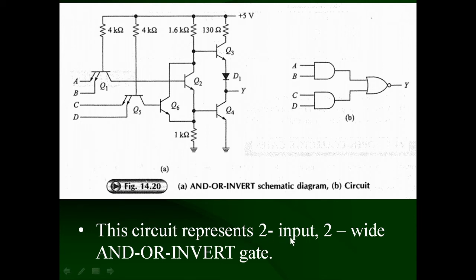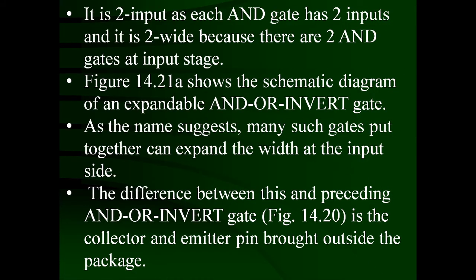This circuit represents a 2-input, 2-wide AND-OR-INVERT gate. '2-input' means each AND gate has two inputs (A,B for the first; C,D for the second). '2-wide' means there are two AND gates feeding the NOR gate — the NOR gate has two inputs, hence 'two wide.'